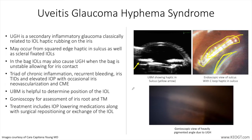UGH syndrome may also be associated with poorly-sized anterior chamber IOLs and iris or scleral-fixated IOLs when the haptics come in direct contact with the posterior surface of the iris, iris root, and vascular tissues proximate to the sulcus.